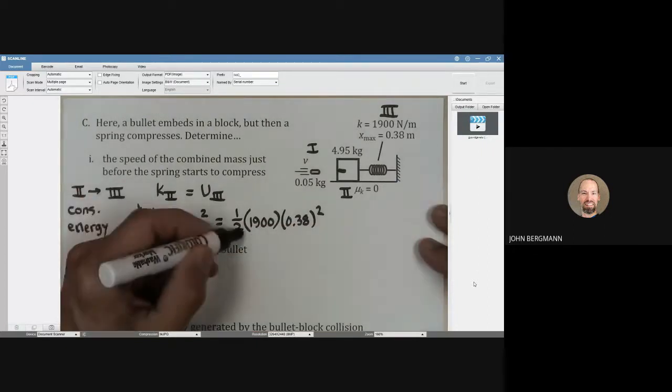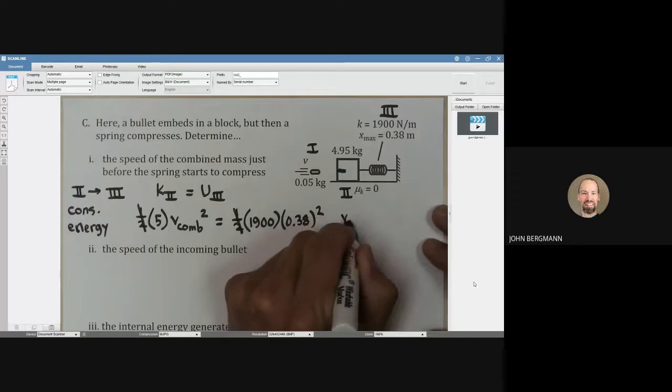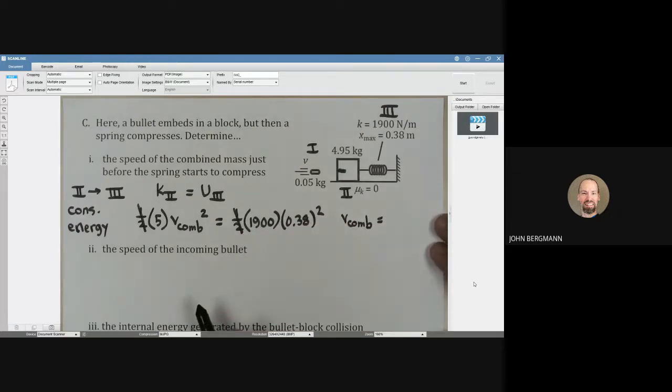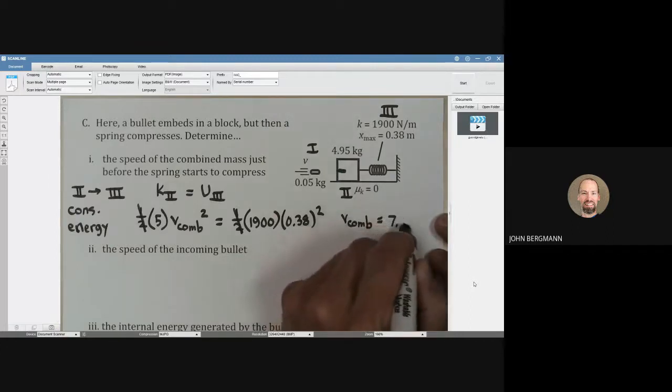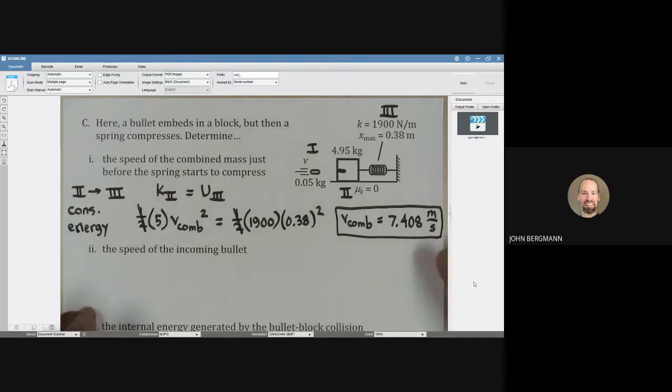We're going to need a calculator for this. When I did this calculation, I got that the combined velocity right after the bullet hits this block, the two slide together with an initial speed of 7.408 meters per second. I like to keep a few extra sig figs in there because we'll probably need that number later.